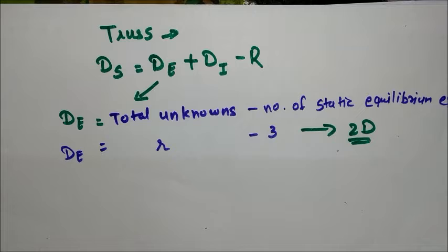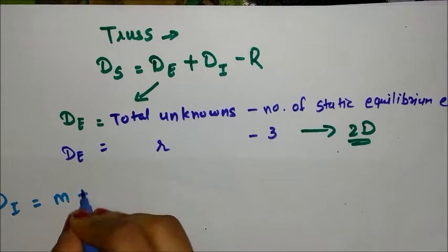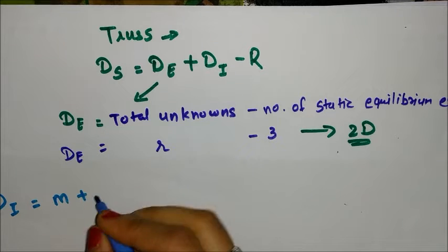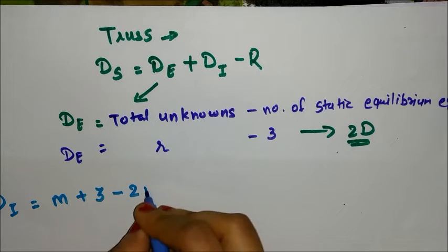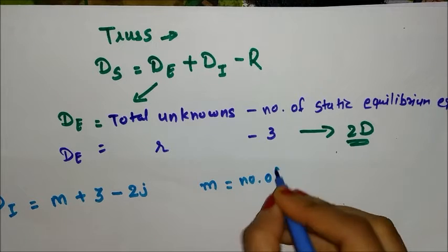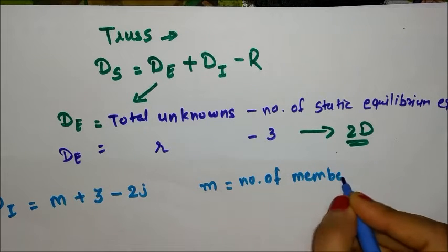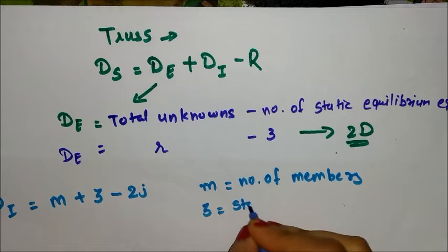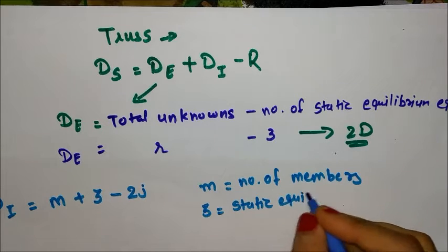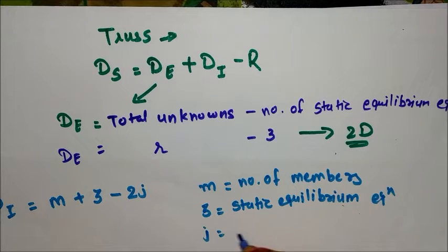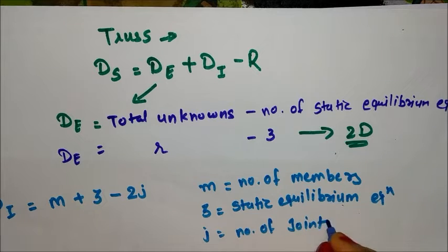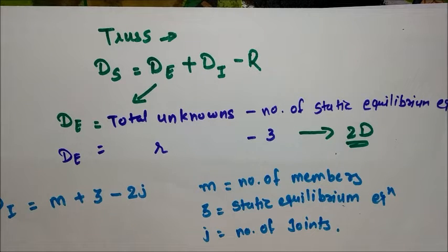Now for DI, the internal indeterminacy for trusses, we have the formula m plus 3 minus 2j for 2D structures, where m is equal to the number of members. The 3 here refers to the static equilibrium equations for 3D structures. j is equal to the number of joints, and for 3D structures it becomes 2j accordingly.